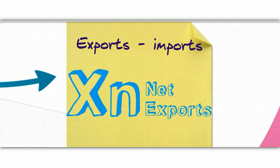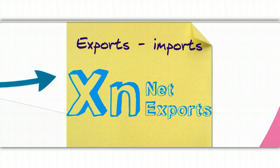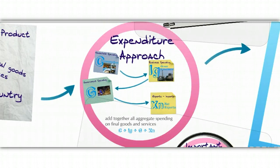Then we've got the rest of the world — that's net exports, represented by XN. This number is actually two parts: the addition of all exports and the subtraction of all imports. This is actually a negative number because when we counted our consumption figures earlier, some of the things counted might be stuff we bought from other countries. We need to take out all those imports since we only count things made in our country. If imports outweigh exports, we end up with a negative number, and that often does happen. Adding all this aggregate spending together gives us our formula: C plus IG plus G plus XN — that is the formula to figure out GDP through the expenditure approach.